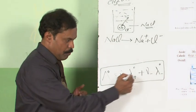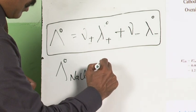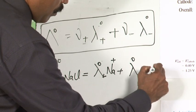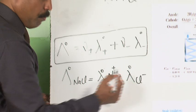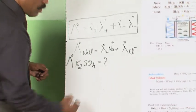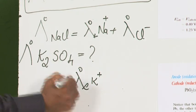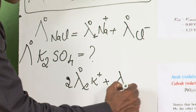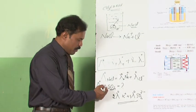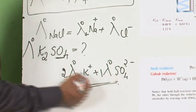By Kohlrausch's law, the molar conductivity at infinite dilution of sodium chloride equals the molar conductivity at infinite dilution of Na⁺ plus the molar conductivity at infinite dilution of Cl⁻. Similarly, the molar conductivity at infinite dilution of K₂SO₄ would be 2 times the molar conductivity at infinite dilution of K⁺ plus 1 times the molar conductivity at infinite dilution of SO₄²⁻.